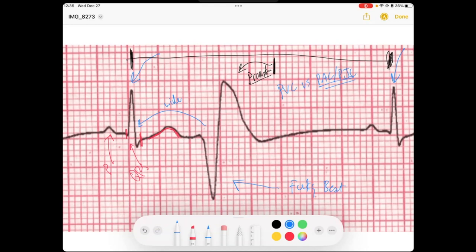But here, this is a wide QRS. So we know that it could be either a PAC with aberrancy or it could be a PVC.